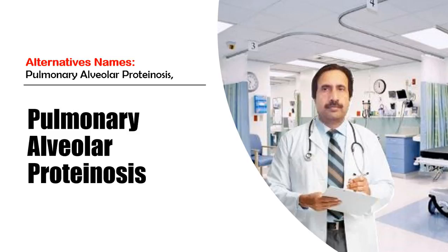Pulmonary alveolar proteinosis, also known as PAP, is a rare lung condition. It occurs when surfactant builds up in your lungs and clogs your airways or air sacs — the alveoli. Surfactant is a natural substance that lowers the surface tension in your lungs and allows you to breathe. There are three main types of PAP: congenital, which means present at birth; acquired, which develops after birth; and secondary.